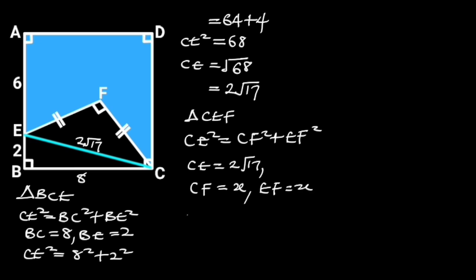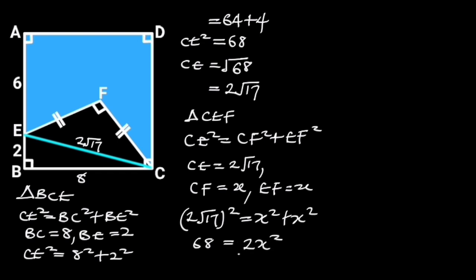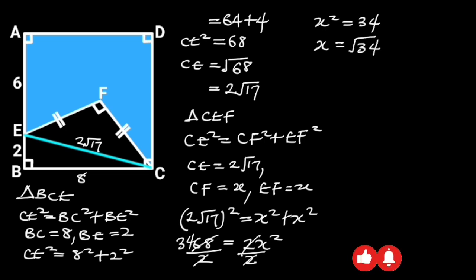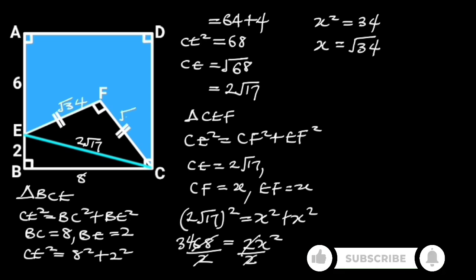Substituting these values in the formula will give us: 2√17 squared is equal to X squared plus X squared. 2√17 squared is equal to 68. X squared plus X squared is equal to 2X squared. So 68 is equal to 2X squared. Dividing through by 2, X squared is equal to 34. Taking the square root of both sides gives us X is equal to √34. Hence, EF is √34 and CF is also √34.